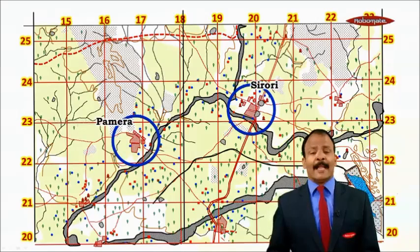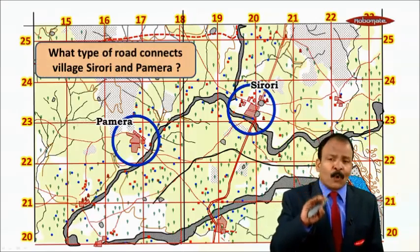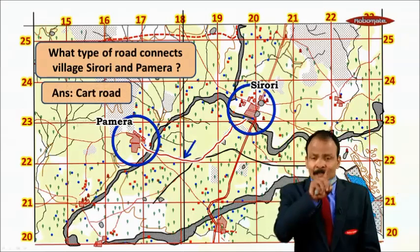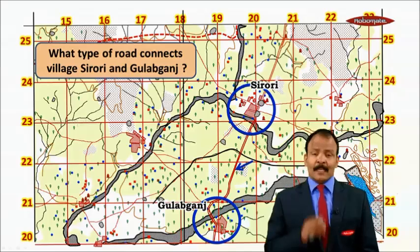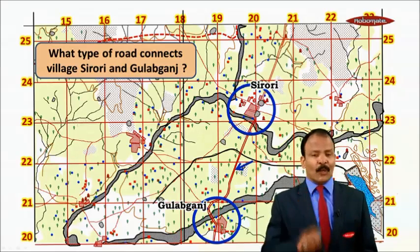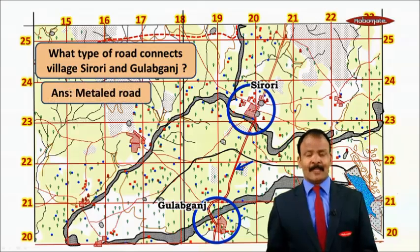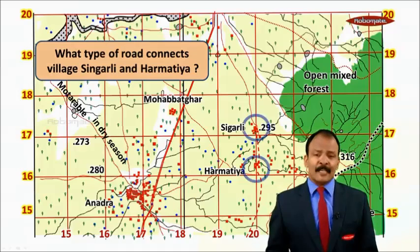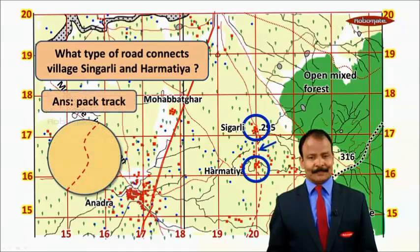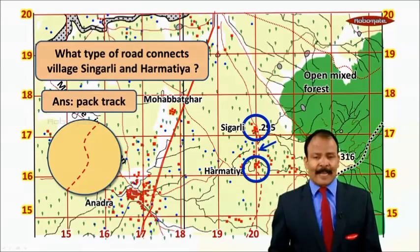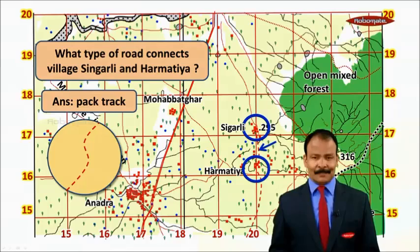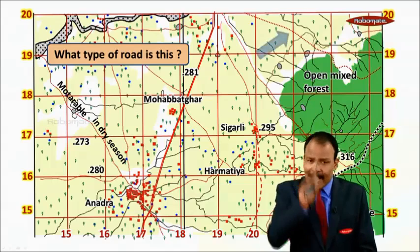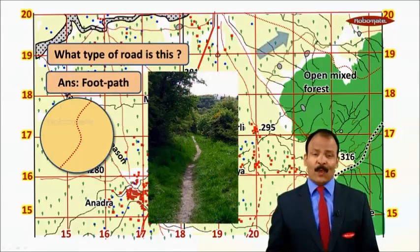Taking two villages, Sirori and Pamera — the road connecting them is a cart track, because it is a single red color line. For villages Sirori and Gulab Ganj, it is a metal road because it is a double line. Village Singarli to Harmatia is a backtrack because it is a single dashed line. A single dotted line is a footpath.